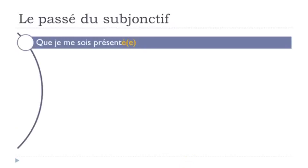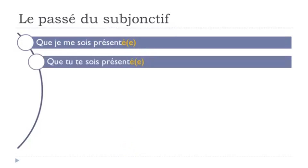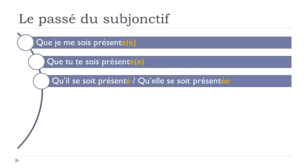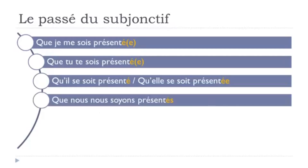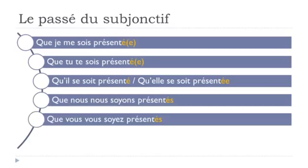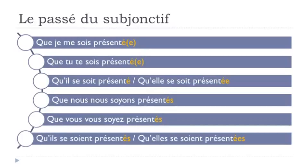Now let's look at reflexive verbs — the se something verbs. For se présenter, it goes like this: que je me sois présenté, que tu te sois présenté, qu'il se soit présenté, qu'elle se soit présentée, que nous nous soyons présentés, que vous vous soyez présentés, qu'ils se soient présentés, qu'elles se soient présentées. Remember to add the reflexive pronoun — me, te, se, nous, vous, se — before the être form.